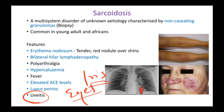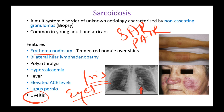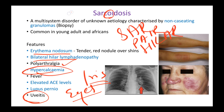Let's recap the main features of sarcoidosis using the SAR mnemonic: erythema nodosum for 'pair', hilar lymphadenopathy for 'hilar', polyarthralgia, hypercalcemia for 'CO' (CA), fever, elevated ACE levels because SAR sounds like 'SIR' - an ACE - and lupus pernio for 'PER'.